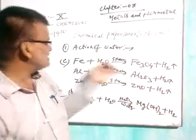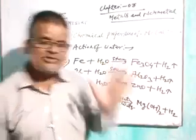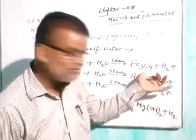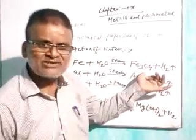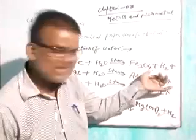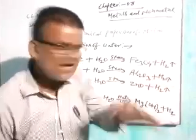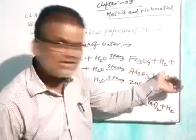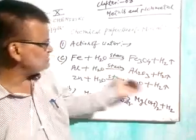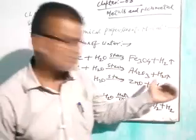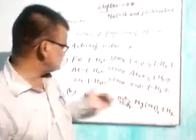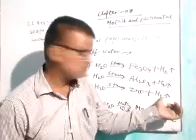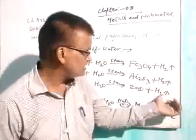For example, iron reacts with steam to give iron 2,3 oxide — ferrous ferric oxide — and releases hydrogen gas. Aluminum reacts with steam to give aluminum oxide and releases hydrogen gas. And zinc reacts with steam to give zinc oxide, ZnO, plus H2, releasing hydrogen gas.